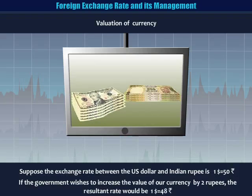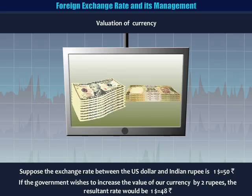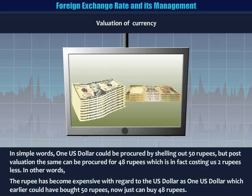Valuation of currency. Suppose the exchange rate between the US dollar and the Indian rupee is 1 dollar equal to 50 Indian rupees. If the government wishes to increase the value of our currency by two rupees, the resultant rate would be 1 dollar equal to 48 Indian rupees. Hence in simple words, one US dollar could be procured by shelling out 50 rupees, but post valuation the same can be procured for 48 rupees, which is costing us two rupees less. In other words, the rupee has become expensive with regard to the US dollar, as one US dollar which earlier could have bought 50 rupees can now just buy 48 rupees.